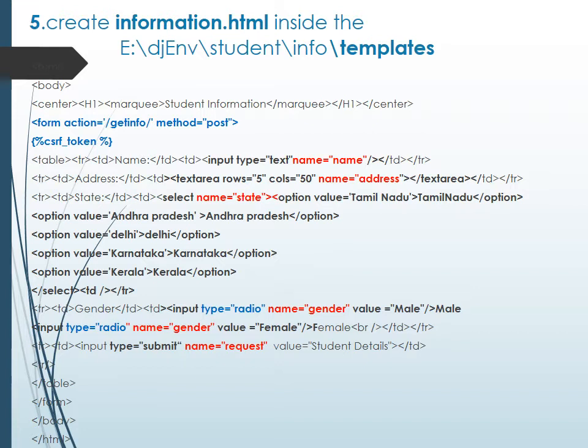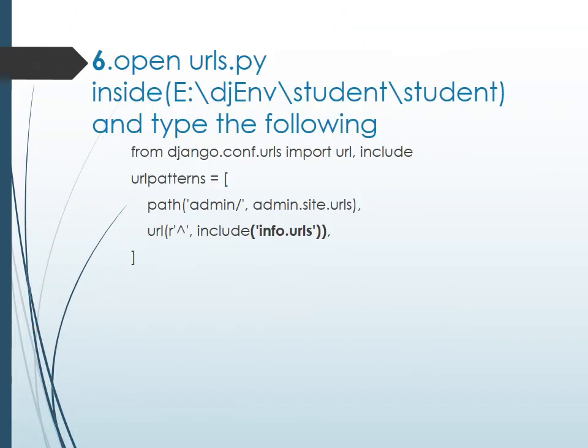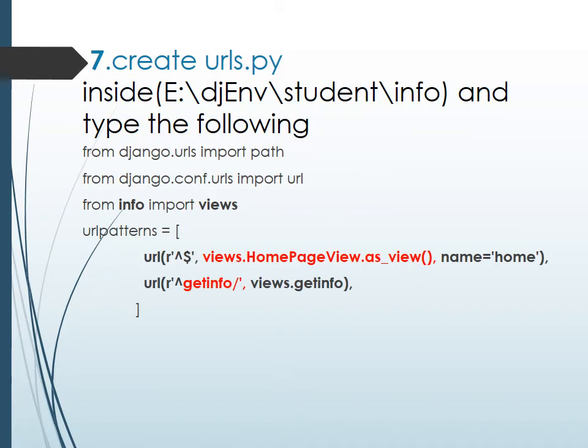After the HTML form is complete, open the inner project folder URL file and include the app URLs (info.urls). This connects the app URL file. The URL file must be created under the app folder. The first URL is the home page view class used to load the template Django template file, and its name is 'home'.